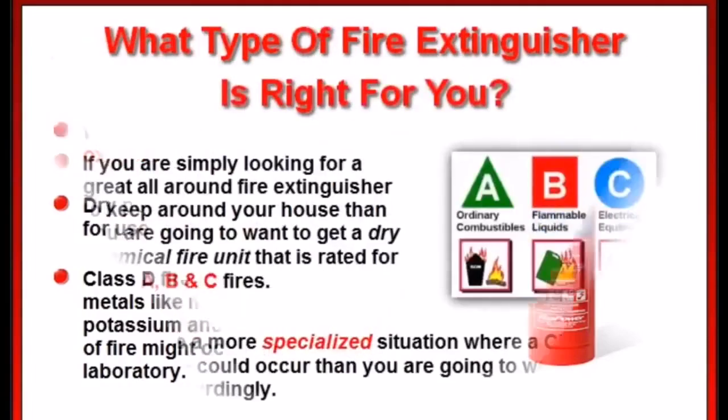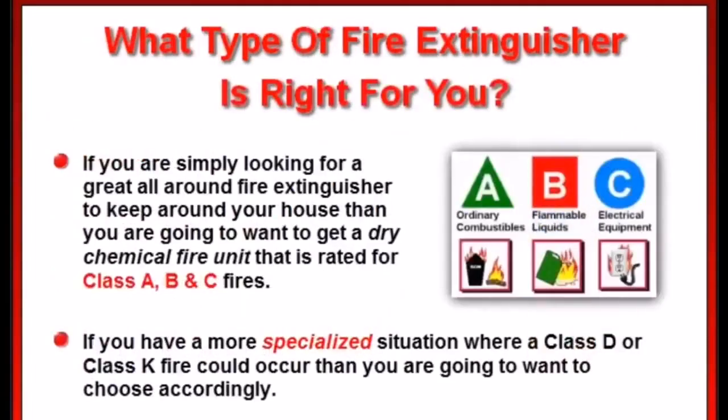As you can see, the most resourceful fire extinguisher to keep around your house is a dry chemical fire unit that's rated for A, B, and C fires. However, if you have a more specialized situation where a class D or class K fire could occur, then you're going to want to choose accordingly.